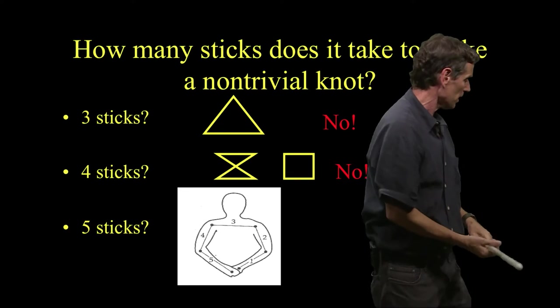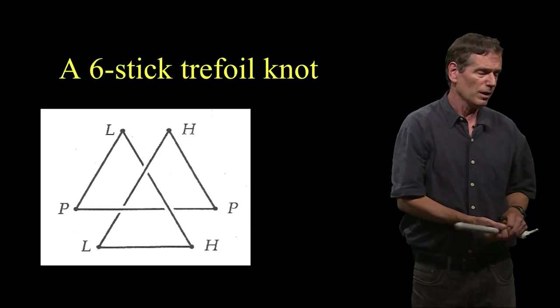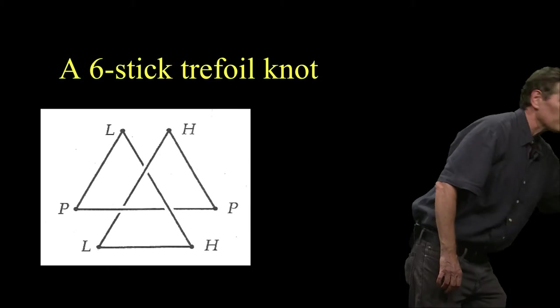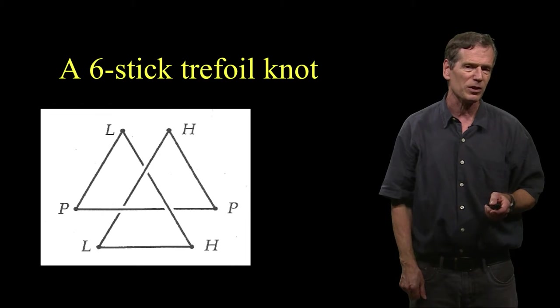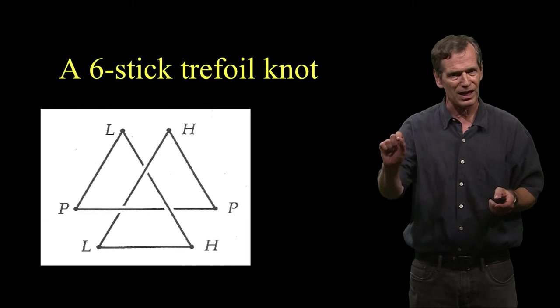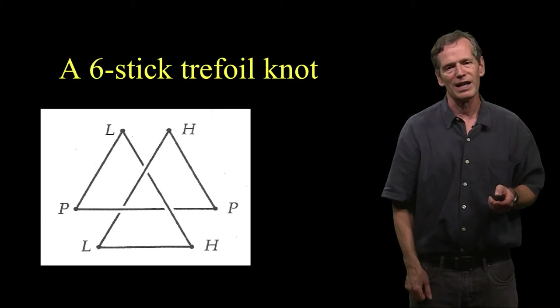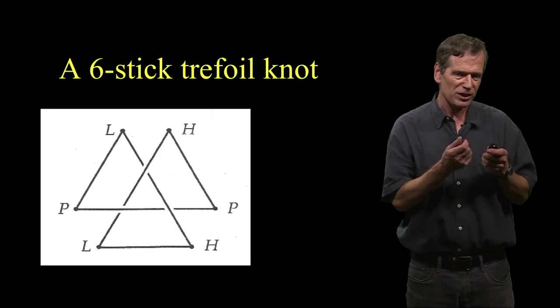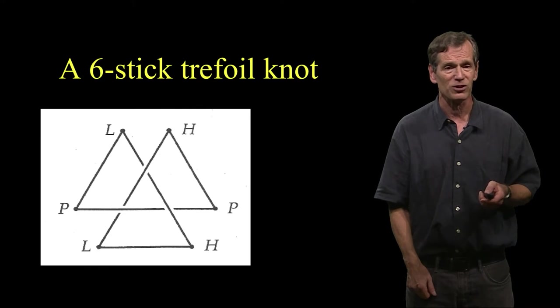In particular, what does the picture look like? It looks like this. And so there's a six stick, it's called a six stick trefoil knot. And you'll notice I have labels on the vertices of that particular knot. The P stands for in the plane. L stands for low beneath the plane. H stands for high above the plane. And so I could actually construct that particular knot out of sticks. And I could see that in fact, I could construct that knot with six sticks.